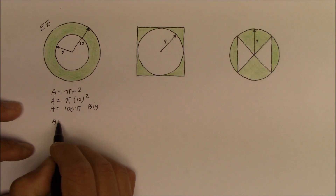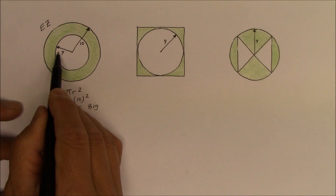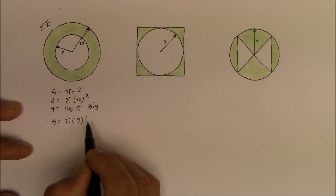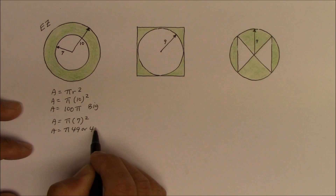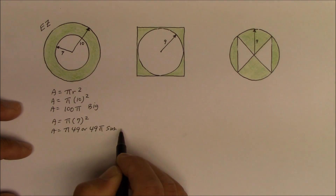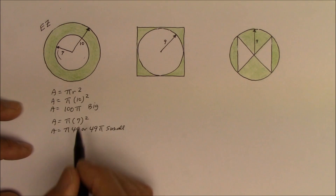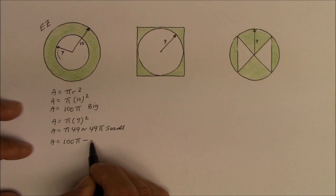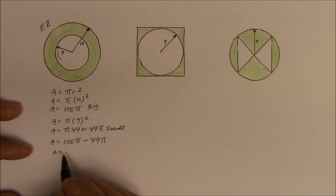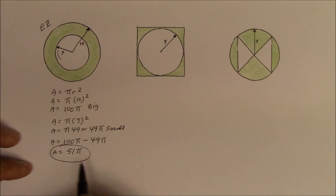Now let's do the small one. Area equals pi r squared, and the radius for the small inner circle that is not shaded is 7. So we evaluate that square and get 49 pi, which is the small one. All you need to do is subtract the small from the big: area equals 100 pi minus 49 pi. That gives you the total area of the outer ring — 51 pi.